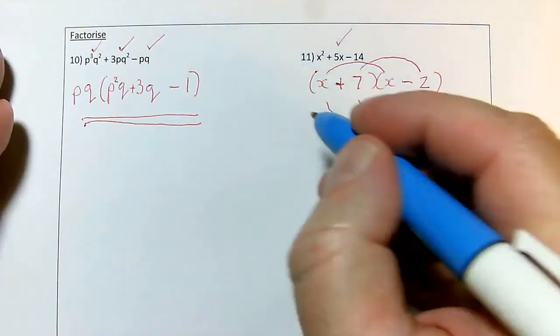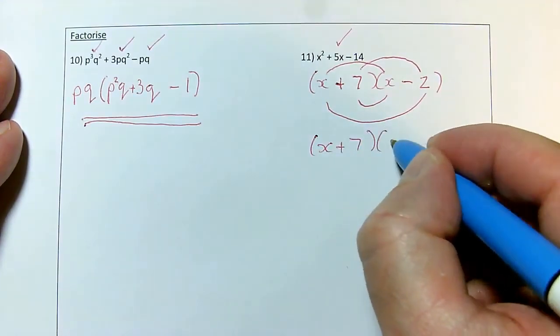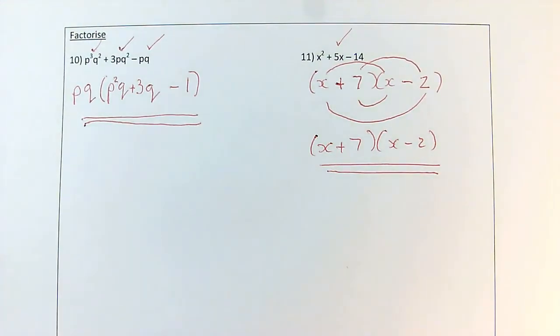Yes, it multiplies out correctly, so I've factorized it. Because I've drawn lines on that, I'm going to write it out again without the lines, but I have got my answer already. That's the correct answer for that one. So that's questions 10 and 11 dealt with on the factorization.